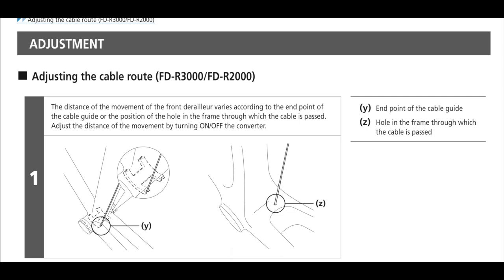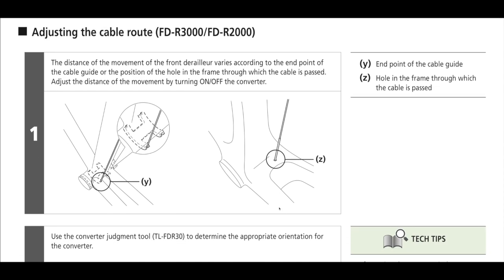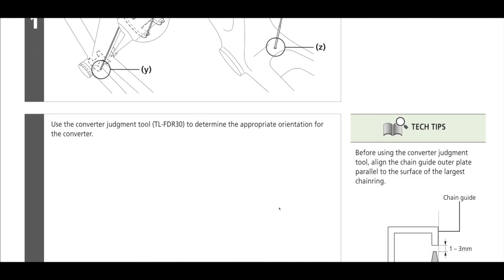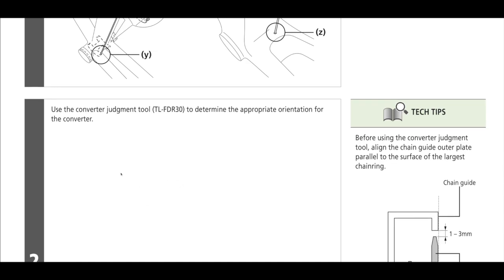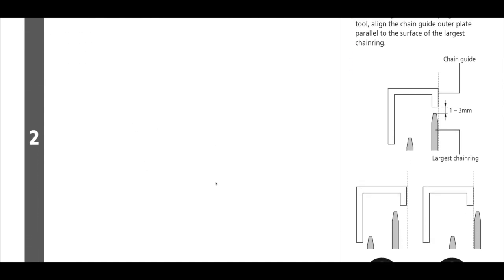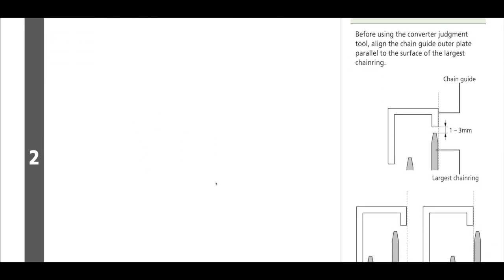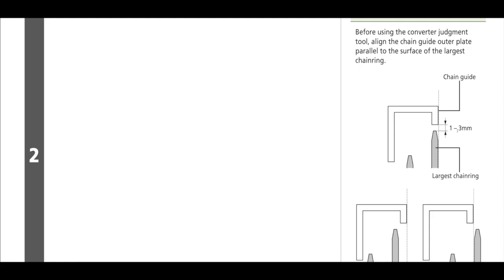In general, the cable comes up under the bottom bracket and hooks to the front derailleur. There's no real industry standard as far as where that cable's going to come out. A lot of frames have the cable come through the frame, so there's a little piece - a converter - that you're going to have to set up.